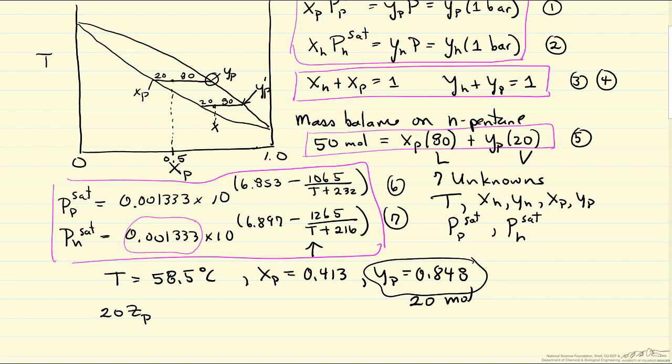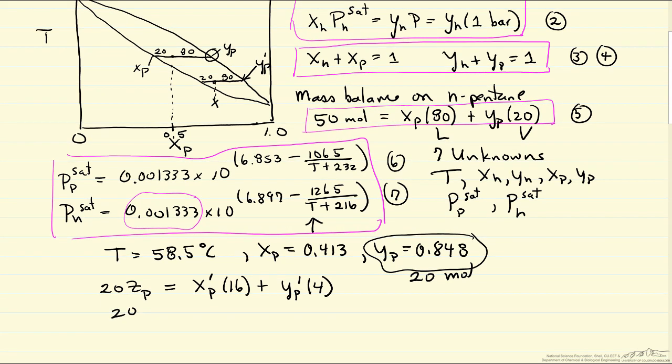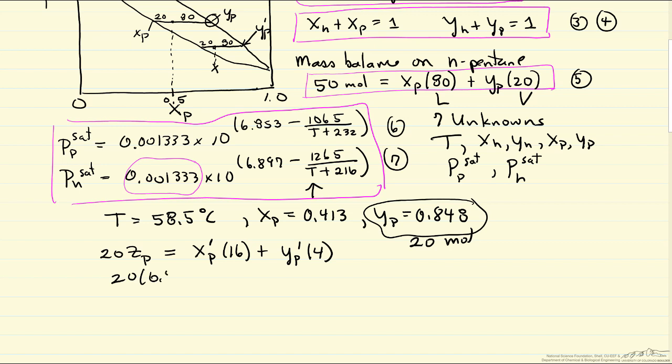I'm using Z because we have X and Y that correspond to the species that form after we vaporize. So Z is going to be our YP. And we're going to have now a new X, let's call it XP prime. And there's 16 moles there because remember we vaporize four. And so the final form of this equation is 20 times 0.848 equals 16 times XP prime plus four times YP prime.